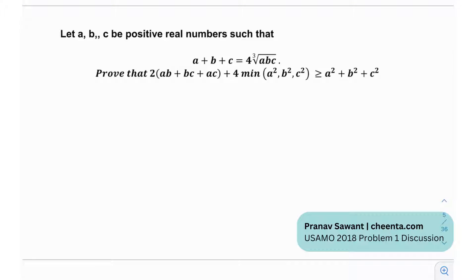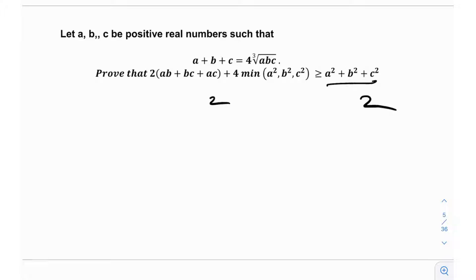The problem: let a, b, c be three positive real numbers such that a + b + c = 4·∛(abc). We need to prove that 2(ab + bc + ac) + 4·min(a², b², c²) ≥ a² + b² + c². First observation: the inequality is homogeneous — degree two on both sides. Second: it's symmetric; replacing a→b, b→c, c→a leaves the inequality the same. So this is a symmetric homogeneous inequality.